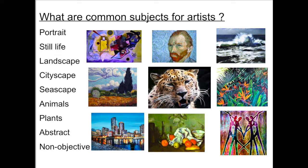Animals can be a subject for an artist, as can plants. Abstract art and non-objective art are two types of art that do not look realistic. They're more artistic, less realistic. Non-objective art doesn't even have an object in it, like the very first picture at the top. It's just lines, shapes, color, and design.